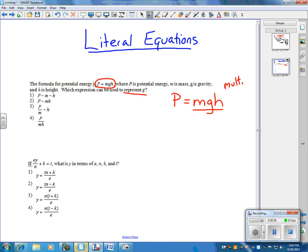So I'm going to start, I'm going to divide by M. I'm just going to divide both sides by M. Now the M's cancel. Then I have GH equals P over M.